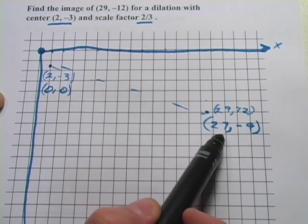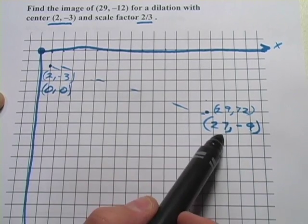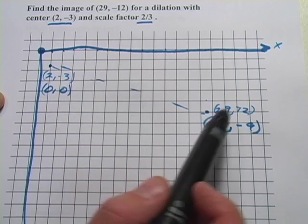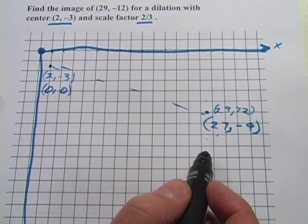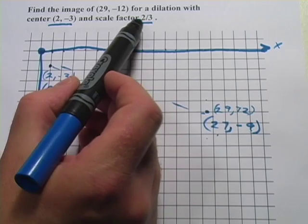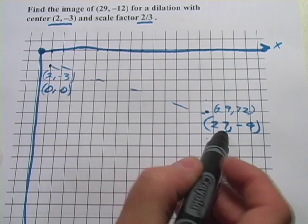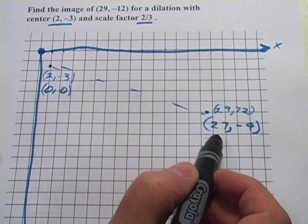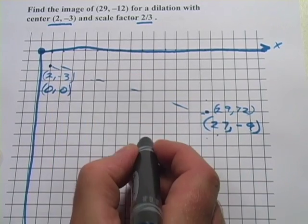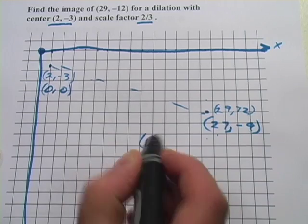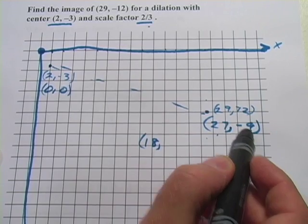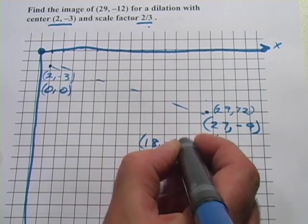And what you'll notice is they, whoever wrote the problem, they kind of made the math easy for us. It's a lot easier to multiply 27 and -9 by 2/3 than it is 29 and -12. But let's go ahead and try that. When I'm multiplying by 2/3, I multiply by 2, I divide by 3. The 27, I'm going to divide by 3 first, that gives me 9. Then I multiply by 2, that gives me 18. And then my -9, I divide by 3 first, I get -3. Multiply by 2, I get -6.